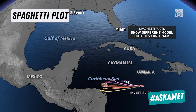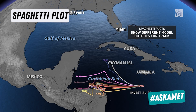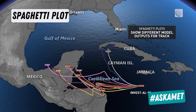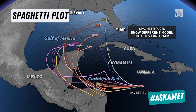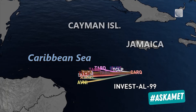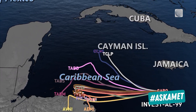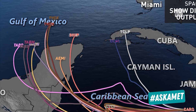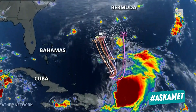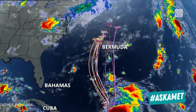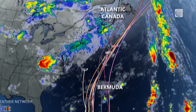A spaghetti plot shows the predicted path of a storm based on multiple models running slightly different algorithms. With time, they spread further and further apart, emphasizing the difference in each model. The closer the lines stay together, the stronger the confidence is in that storm.